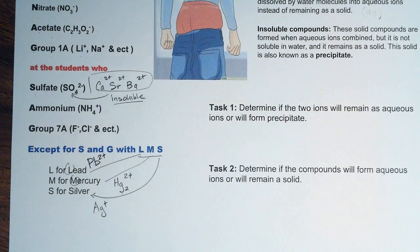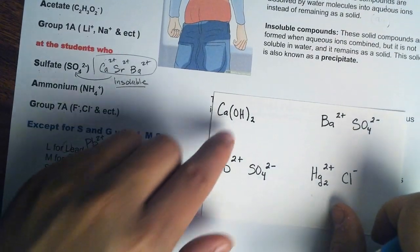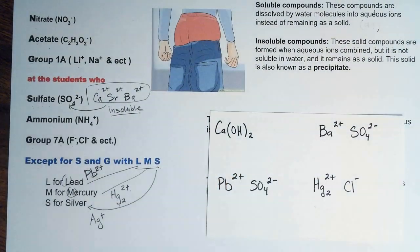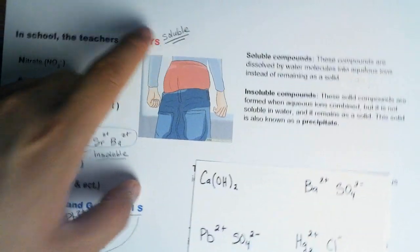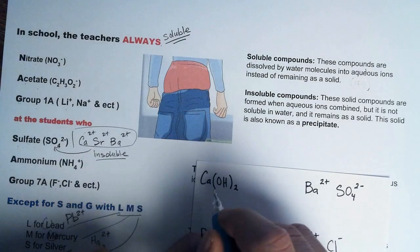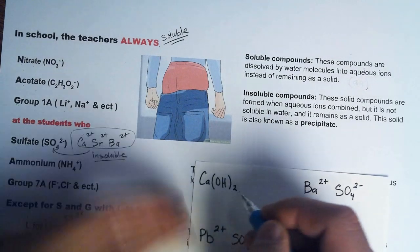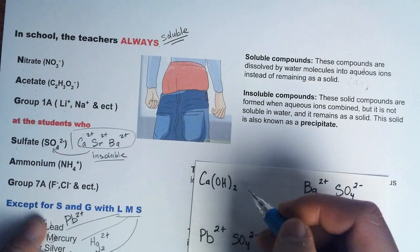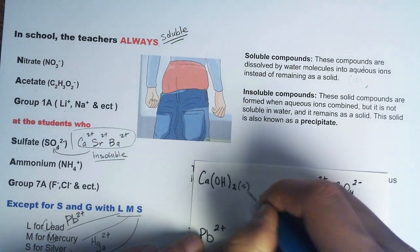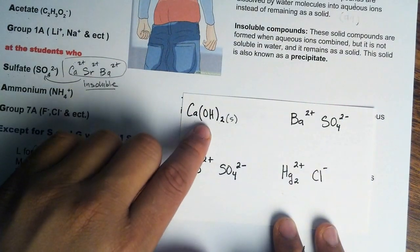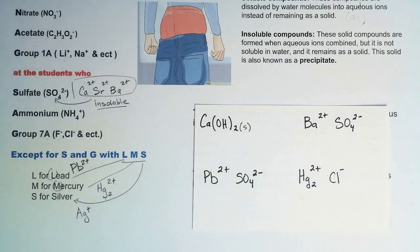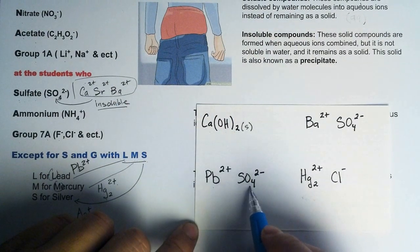Let's try another problem together. We have calcium hydroxide. Calcium doesn't apply to any of the rules. So what happens when we see a compound that does not apply to the rules? We have to assume it is the opposite of always soluble — it is going to be insoluble. Calcium hydroxide doesn't apply to any of the rules, so therefore we know it is going to remain as a solid.